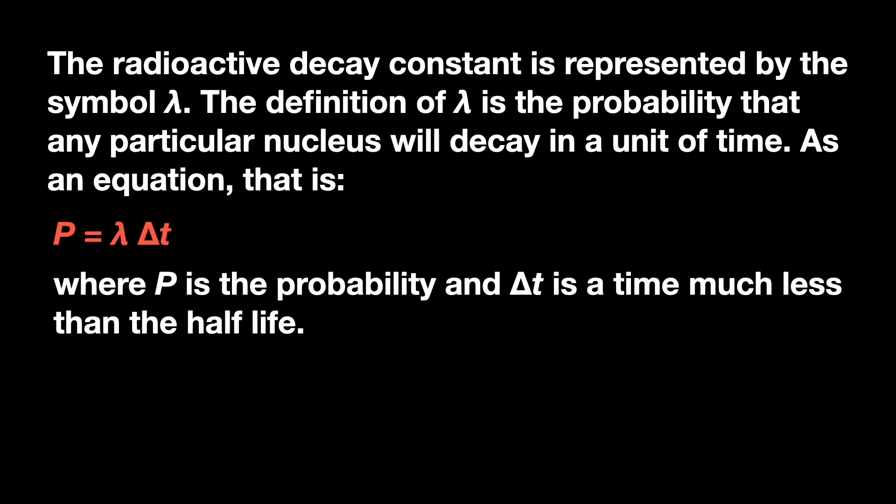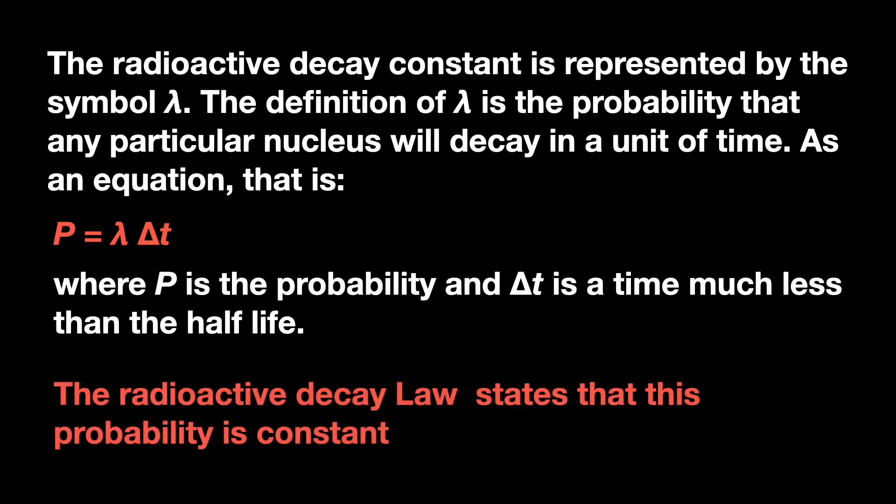As an equation, that's probability equals lambda delta t, where delta t is a time much less than the half-life. The radioactive decay law states that this probability for a particular isotope is constant.